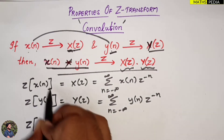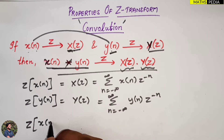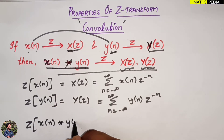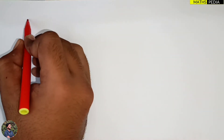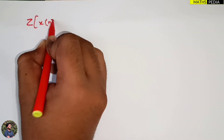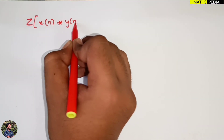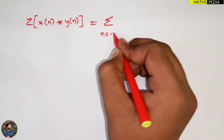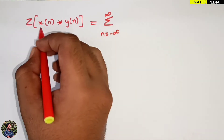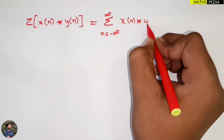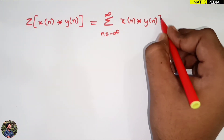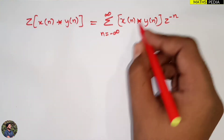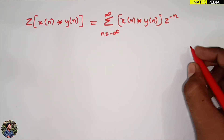What we need to find is the Z-transform of the convolution of X(n) and Y(n). That will be the summation from n = −∞ to ∞ of [X(n) convolved with Y(n)] times Z^(−n). This comes from the standard Z-transform formula.